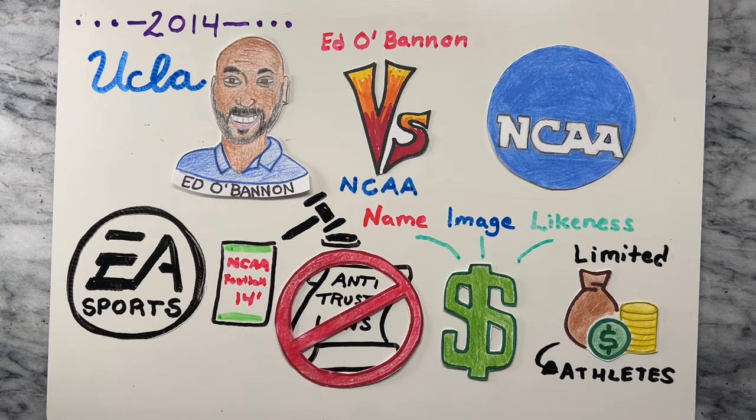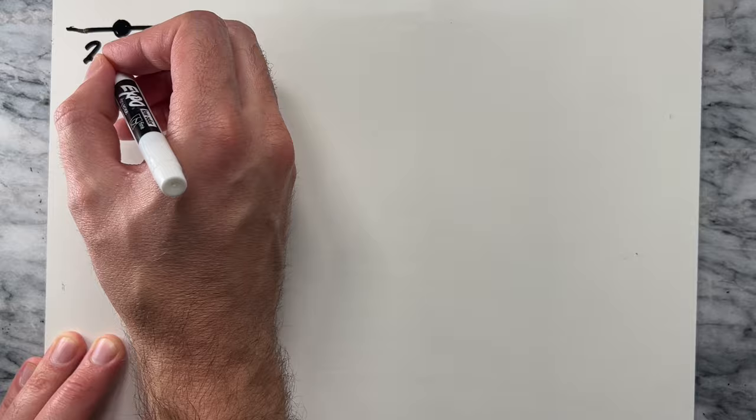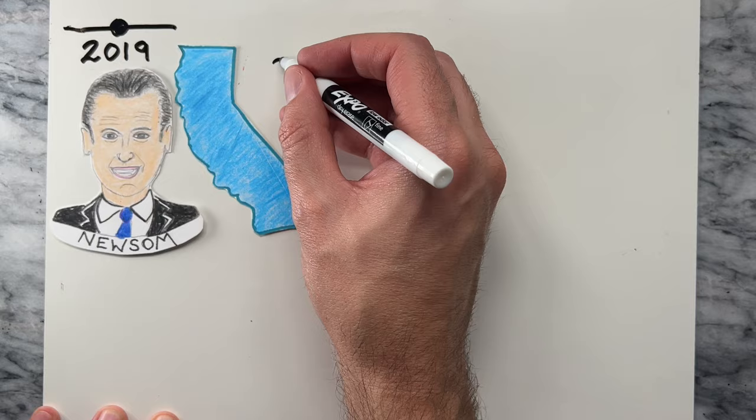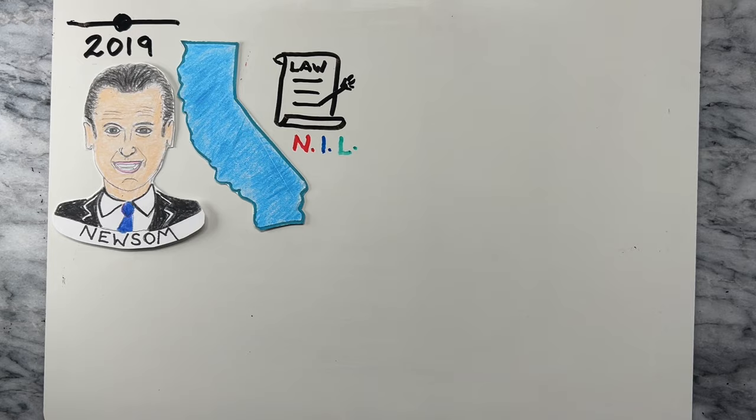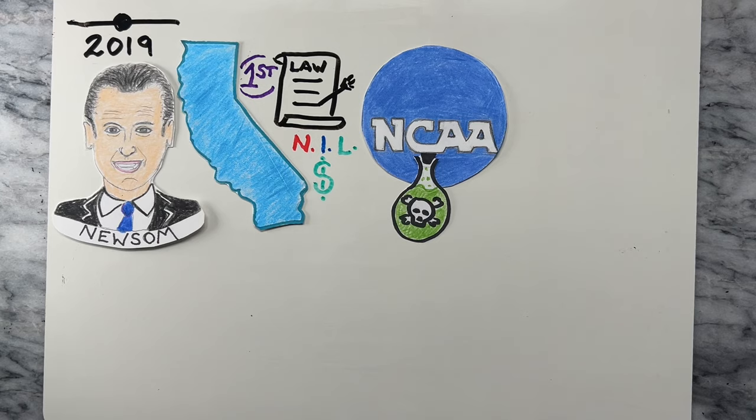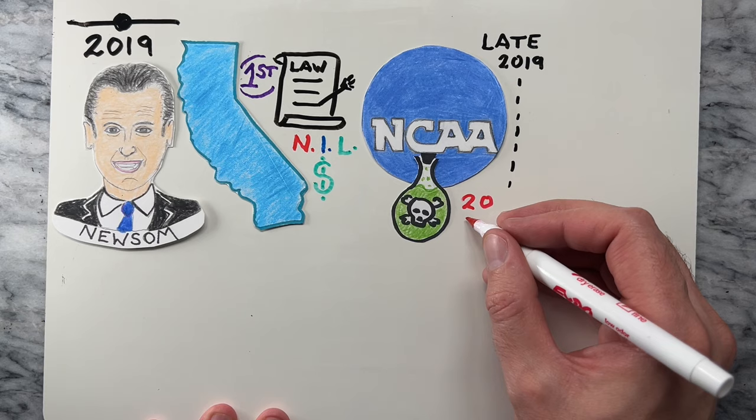In 2019, Governor Gavin Newsom of California passed a law allowing college athletes to be compensated for their name, image, and likeness. California became the first state to allow this. The NCAA saw this move as harmful to the institution of college sports, and by late 2019, more than 20 states were passing legislation to allow NIL.